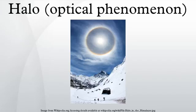Atmospheric phenomena such as halos were used as part of weather lore as an empirical means of weather forecasting before meteorology was developed. They often do mean that rain is going to fall within the next 24 hours, as the cirrostratus clouds that cause them can signify an approaching frontal system. Other common optical phenomena involving water droplets rather than ice crystals include the glory and the rainbow.